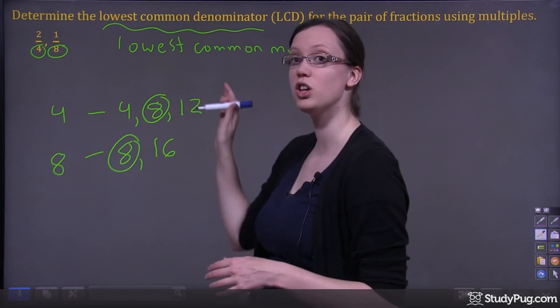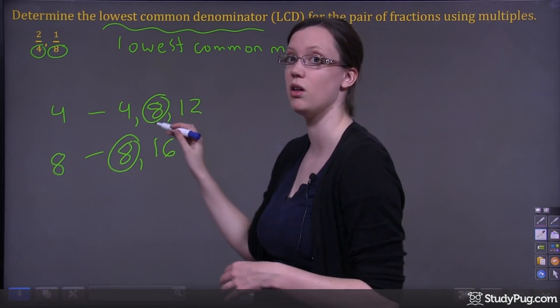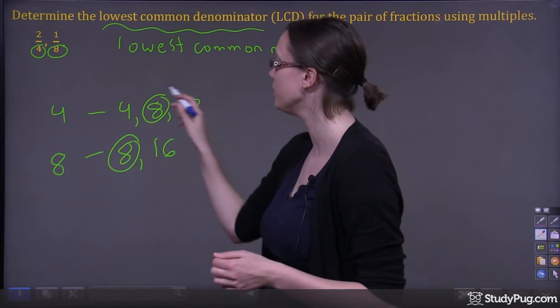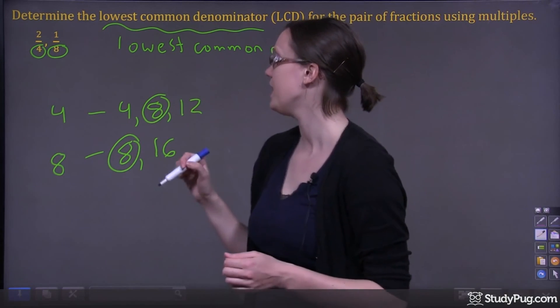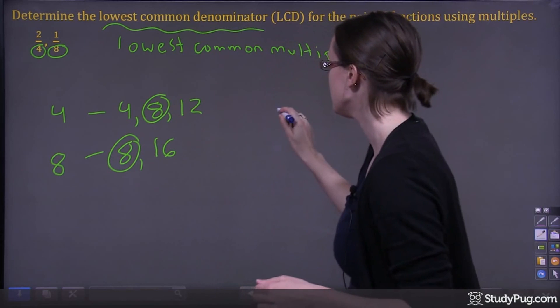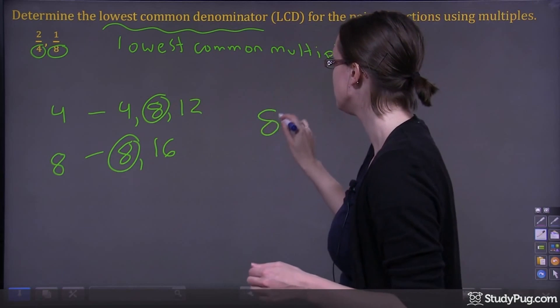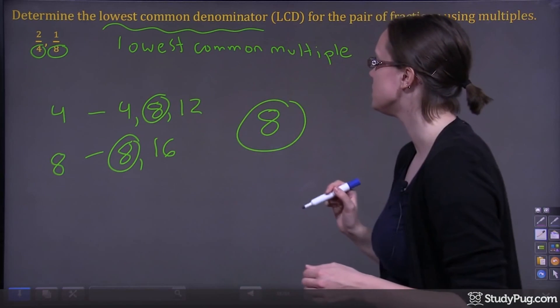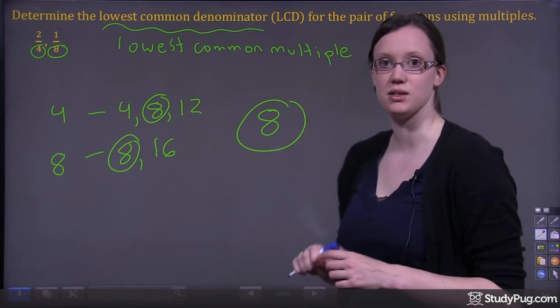Just make sure that you clearly circle your answer — in this case, circle 8 — so that the marker knows that 8 is your answer. So that's our lowest common denominator.